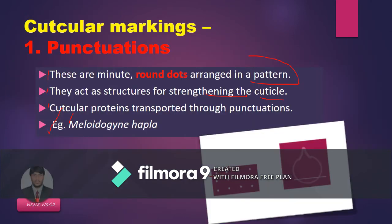Cuticular markings are divided into different types: punctuations, transverse markings, and longitudinal markings. Punctuations are minute round dots arranged in a pattern. They act as a structure for strengthening the cuticle and help in the transportation of proteins through the punctuation. This type of punctuation is found in Meloidogyne hapla.